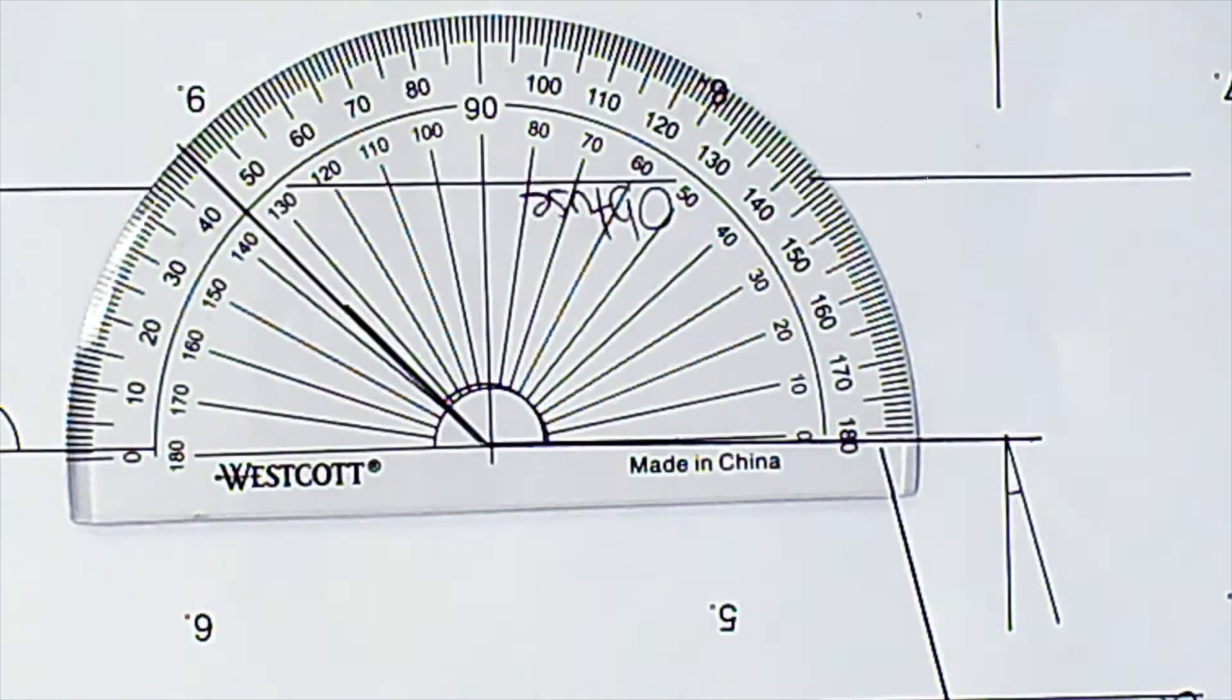Take a step back. How many degrees is this angle right now? It's an obtuse angle. A hundred and thirty five. A hundred thirty five degrees is correct.